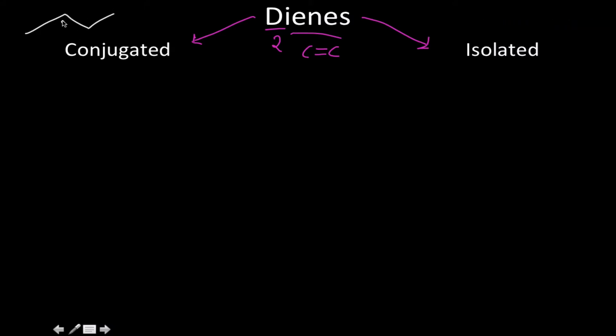An example of a conjugated diene is something that looks like this, whereas an isolated diene is something that looks kind of like this. And I'll explain the differences between each of these.